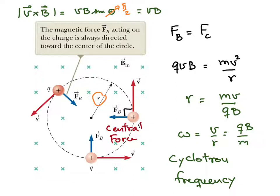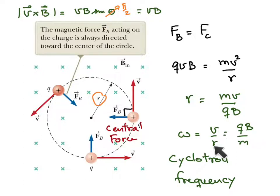You can see that this omega is independent of the velocity of the particle and the radius of the circle. It depends only on the charge of the particle, the magnetic field, and the mass of the particle. This can be really useful and we will talk about it later.